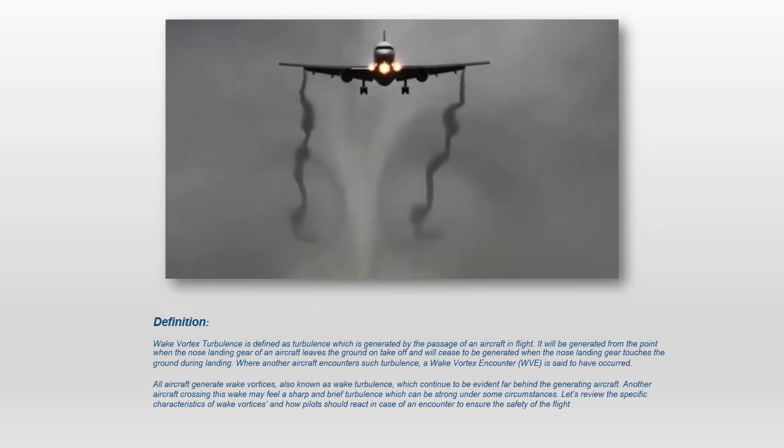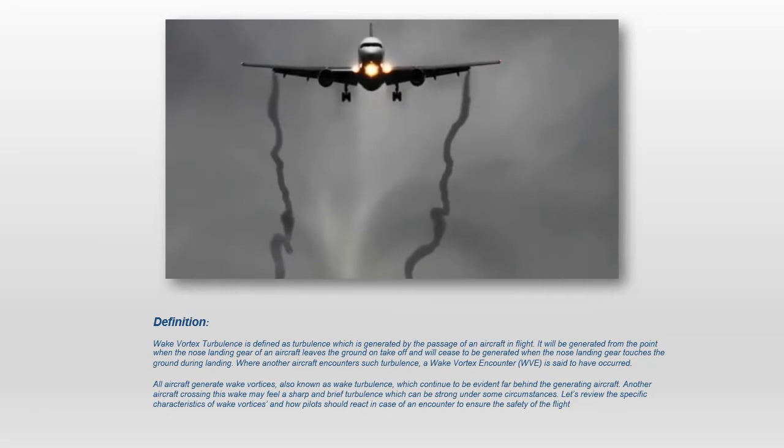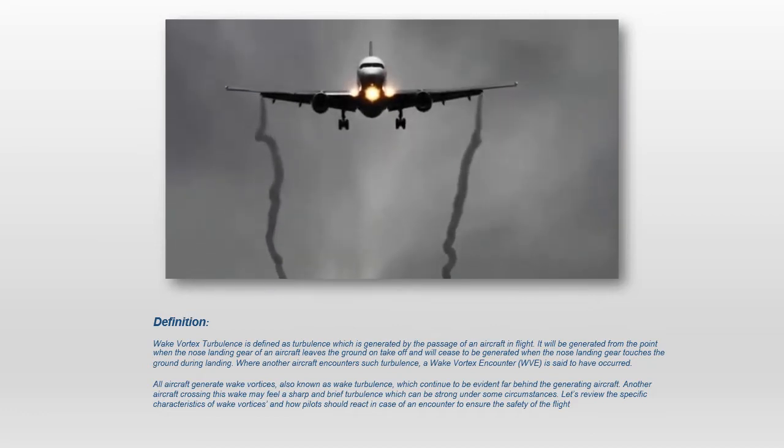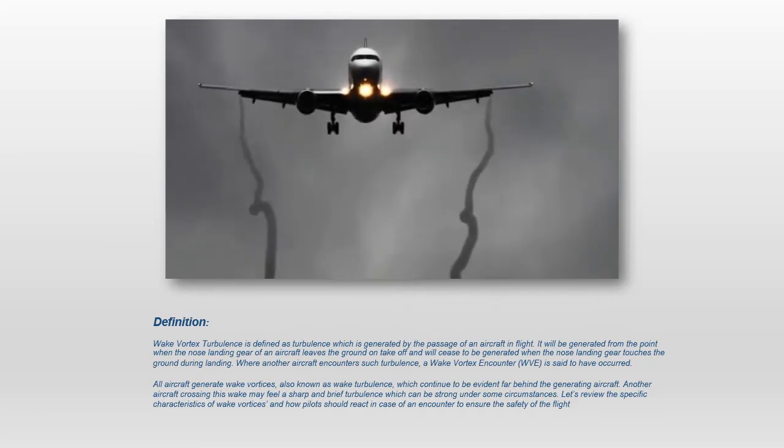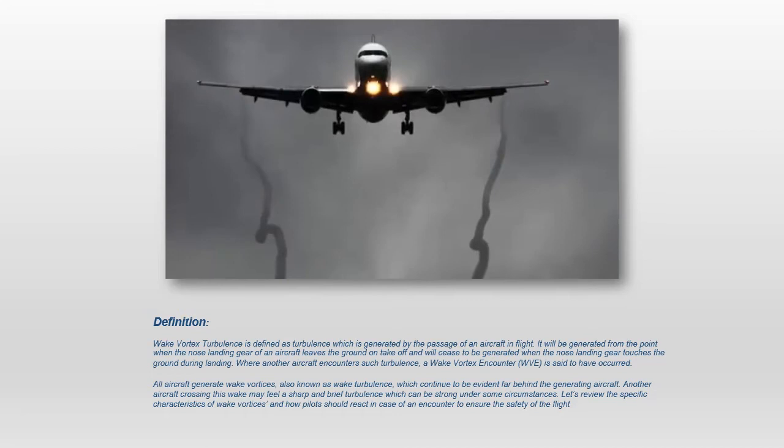All aircraft generate wake vortices, also known as wake turbulence, which continue to be evident far behind the generating aircraft. Another aircraft crossing this wake may feel a sharp and brief turbulence which can be strong under some circumstances. Let's review the specific characteristics of wake vortices and how pilots should react in case of an encounter to ensure the safety of the flight.